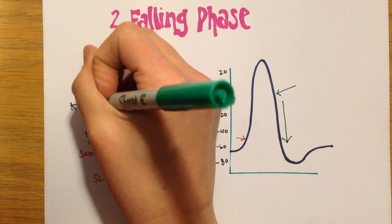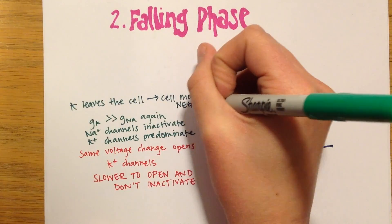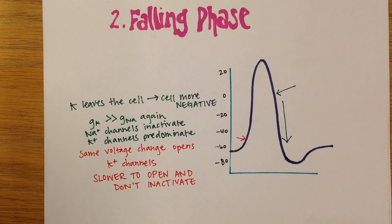As potassium moves down the electrical and concentration gradients, it leaves the cell and the absence of positive charge drives the membrane potential more negative.